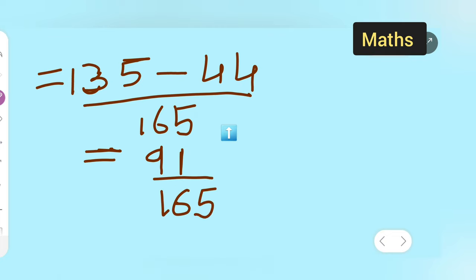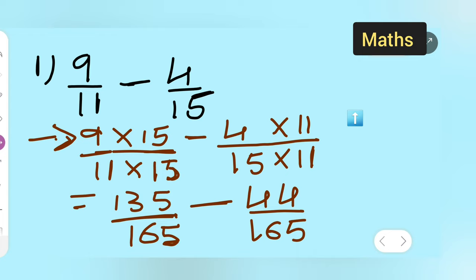So let me explain you all this. Let me explain you all these steps. What I have done over here is we cannot subtract when the denominator is different. For that we have to make the denominator same. So we are cross multiplying. 9 upon 11 we multiply it with 15. Minus 4 upon 15 we multiply it with 11. So 9 times 15 are 135, 11 times 15 are 165, 4 times 11 are 44, 15 times 11 are 165.